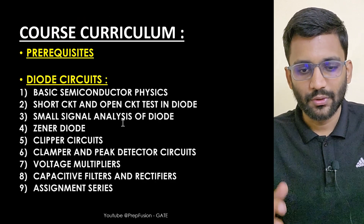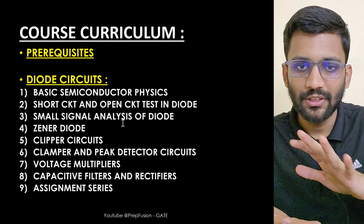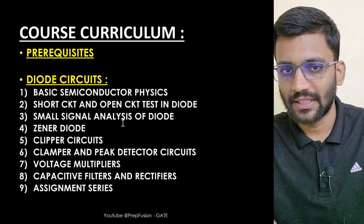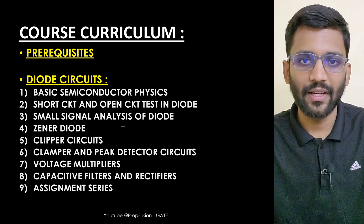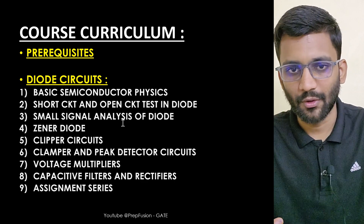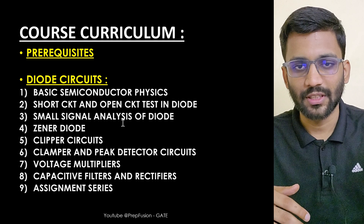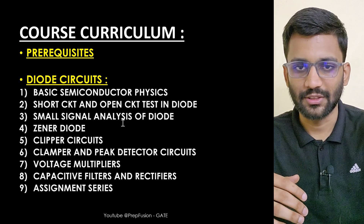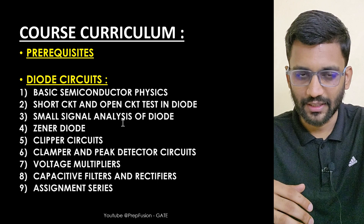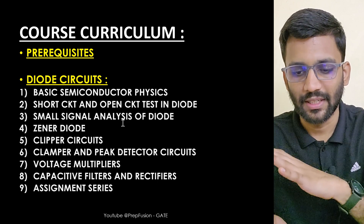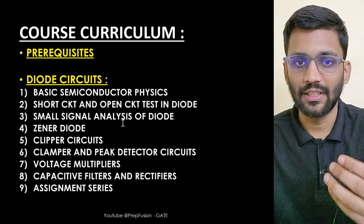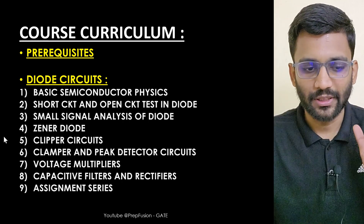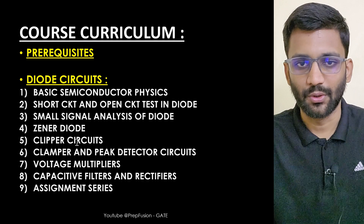The course curriculum starts with prerequisites — network analysis — with a complete roadmap provided. Then we start with diode circuits from scratch, covering basic semiconductor physics, short circuit, open circuit tests, and everything in the syllabus in depth. You will see a lot of clamper and peak detector circuits that you may never have seen before. You can also check my diode circuit videos on YouTube.